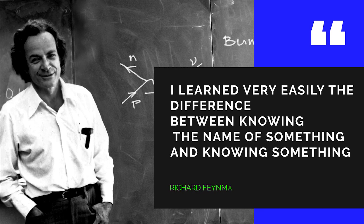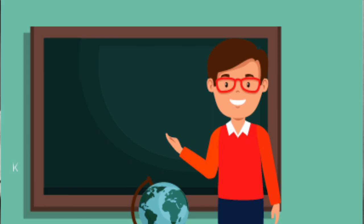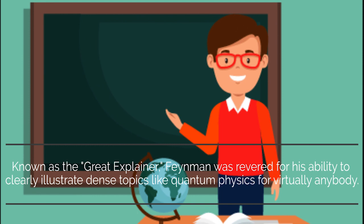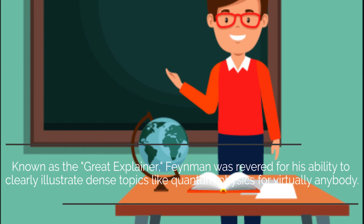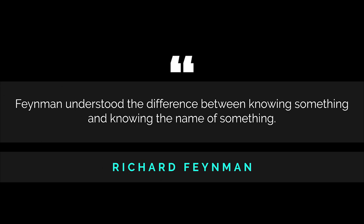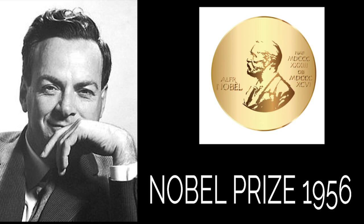I learned very easily the difference between knowing the name of something and knowing something. Known as the Great Explainer, Feynman was revered for his ability to clearly illustrate dense topics like quantum physics for virtually anybody. Feynman understood the difference between knowing something and knowing the name of something, and it's one of the most important reasons for his success.